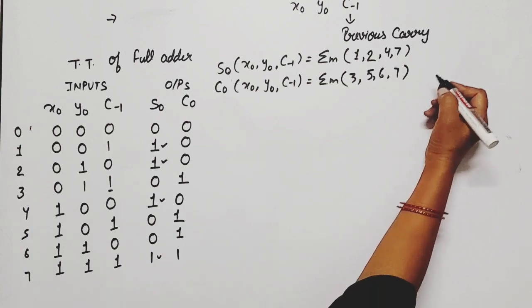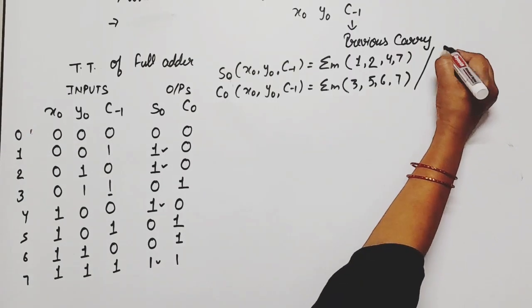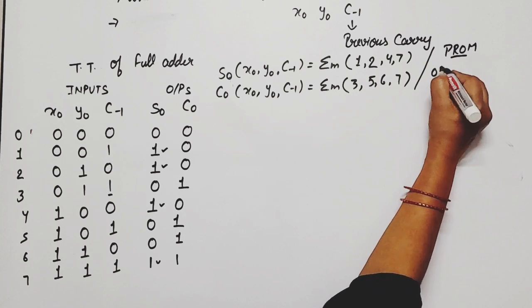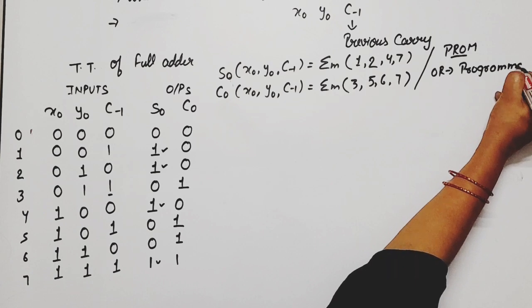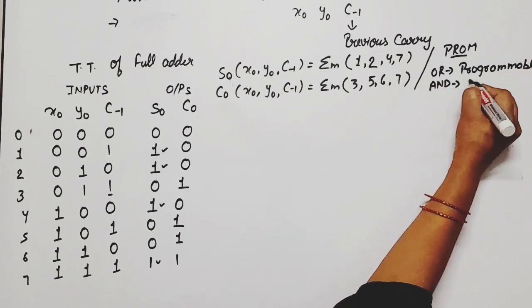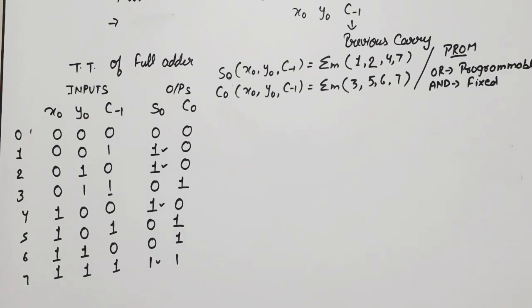So in case of PLDs, this is example of PLDs basically. So what happens in PROM case? This is PROM means OR is programmable, AND array, AND will be fixed. Now we all know in case of PLDs, AND array we use at input side, OR array use at output side.